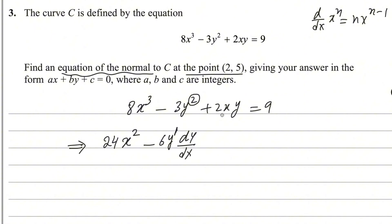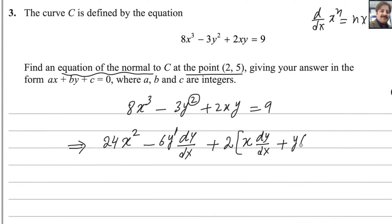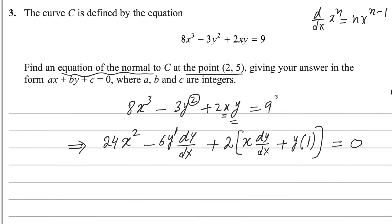For the 2xy term, we apply the product rule. We keep the first function x as-is and take the derivative of y, which is dy/dx, then add y as-is times the derivative of x, which is 1. So the derivative of 2xy is 2x·(dy/dx) + 2y. The derivative of the constant 9 is 0.